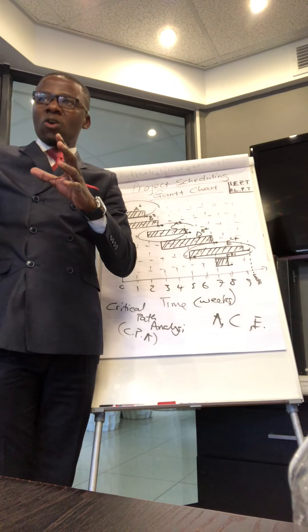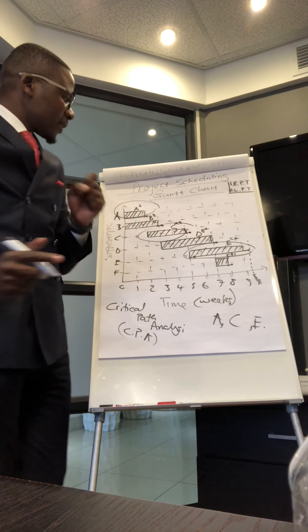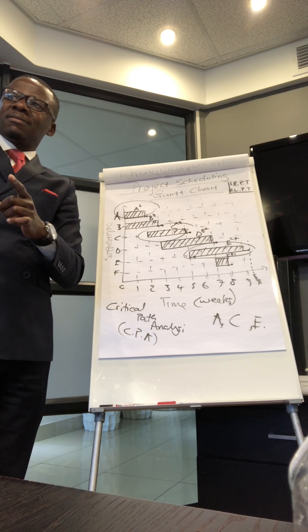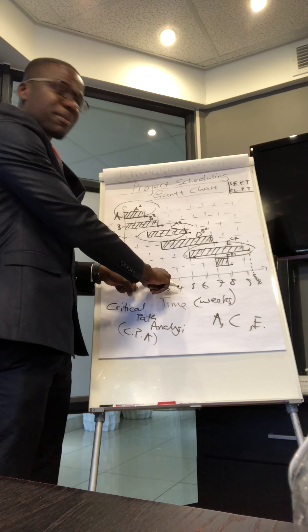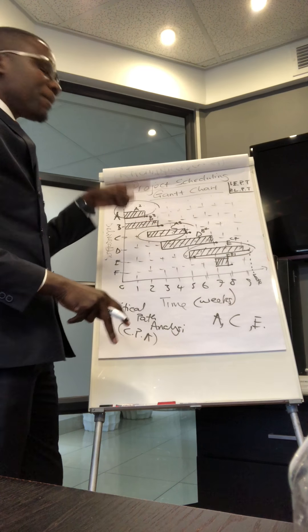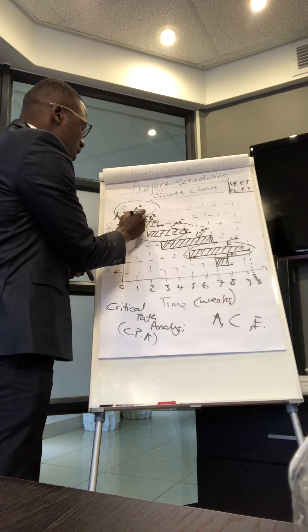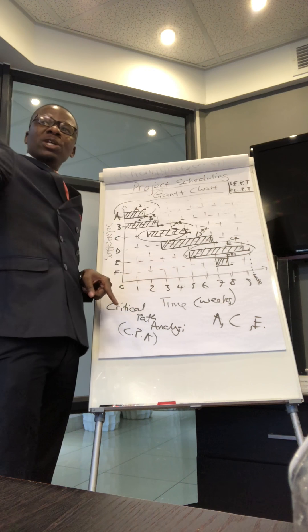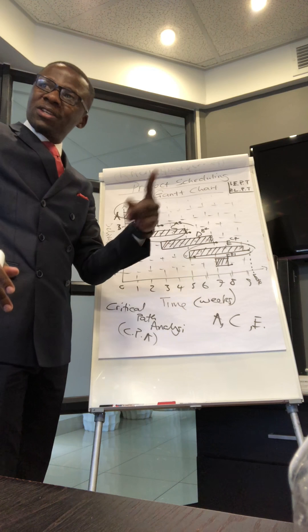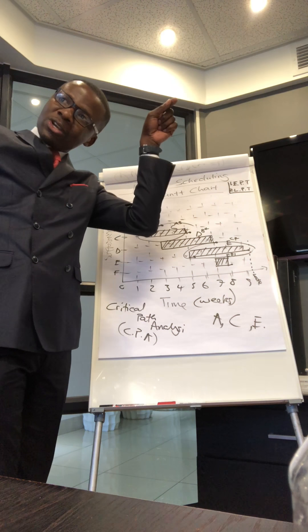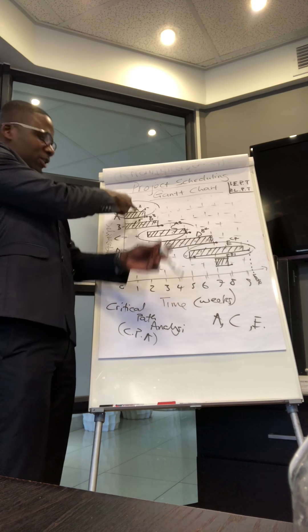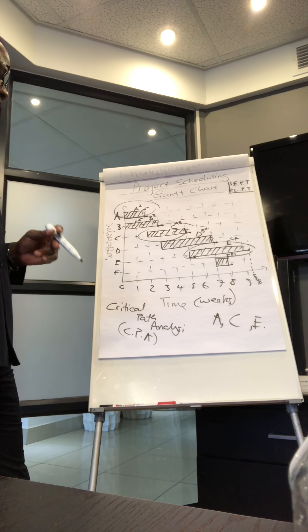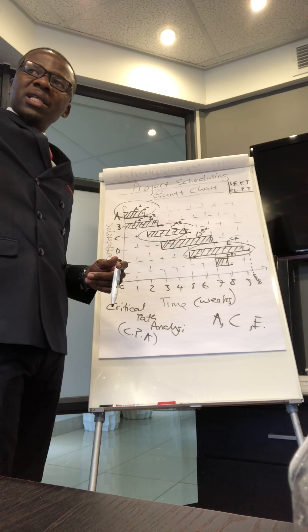One of the uses of the Gantt chart is to organize — meaning to allocate resources. For example, A and B happen at the same time in the first two weeks, and B and C overlap in another week. But A is critical and B is not. So if you have five people on A and five on B and you're lagging behind on A, you move people from B to A so that the critical activity finishes on time. That would be the smart resource allocation decision.